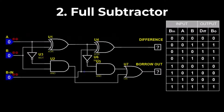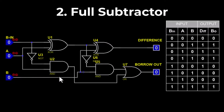Let's explain the full subtractor with the help of the truth table. As you can see, there are three inputs — A, B, and borrow in — and two outputs: difference and borrow out. Let's apply the inputs and check the output of the full subtractor circuit. When all inputs are zero, the difference and borrow out both will be zero.